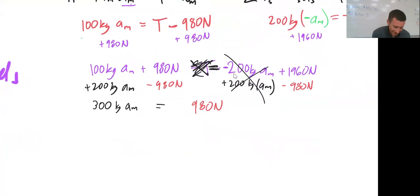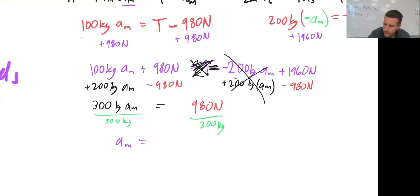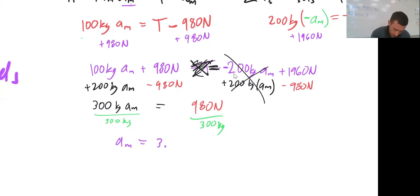Dividing both sides by 300 kilograms: the acceleration of the man equals 980 divided by 300, which is 3.27 meters per second squared, or approximately 3.3 meters per second squared.